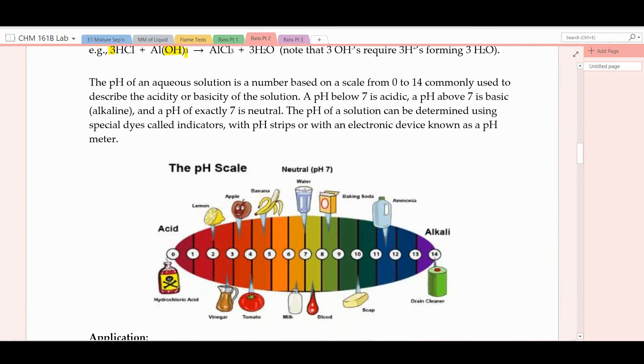Now, you're probably quite familiar with pH, but let me mention it briefly. The pH of an aqueous solution is a number based on a scale from 0 to 14 and is commonly used to describe the acidity or basicity of a solution. The pH below 7 is acidic. The pH above 7 is basic to the right on this diagram. And then another word for basic is alkaline. And the pH of exactly 7 is neutral. You can determine the pH of a solution using special dyes called indicators. You can use pH strips or electronic devices such as pH meters. In this experiment, we'll be using a dye, an indicator dye.